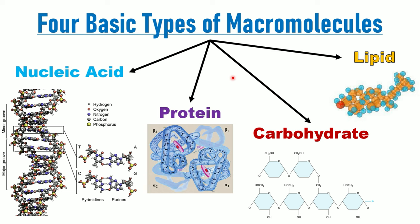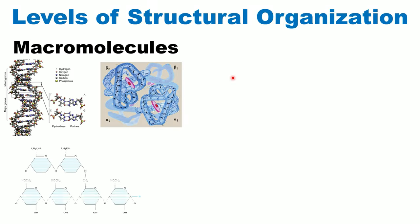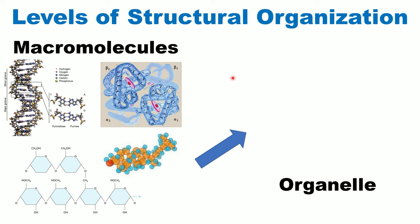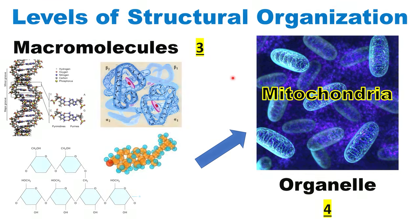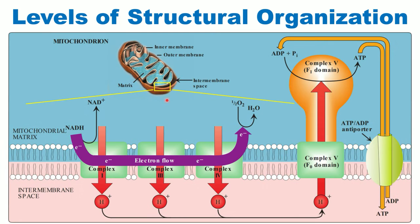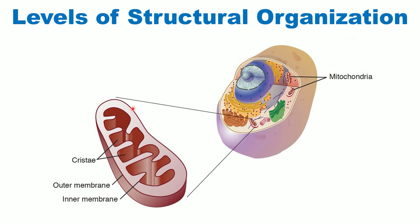These four basic types of macromolecules form the human body, completing level three of structural organization. Several macromolecules will give an organelle, so moving from level three to level four. An example of an organelle is the mitochondria. As we can see, the mitochondria is composed of several macromolecules — proteins that form its structure, lipids, DNA, and carbohydrates.